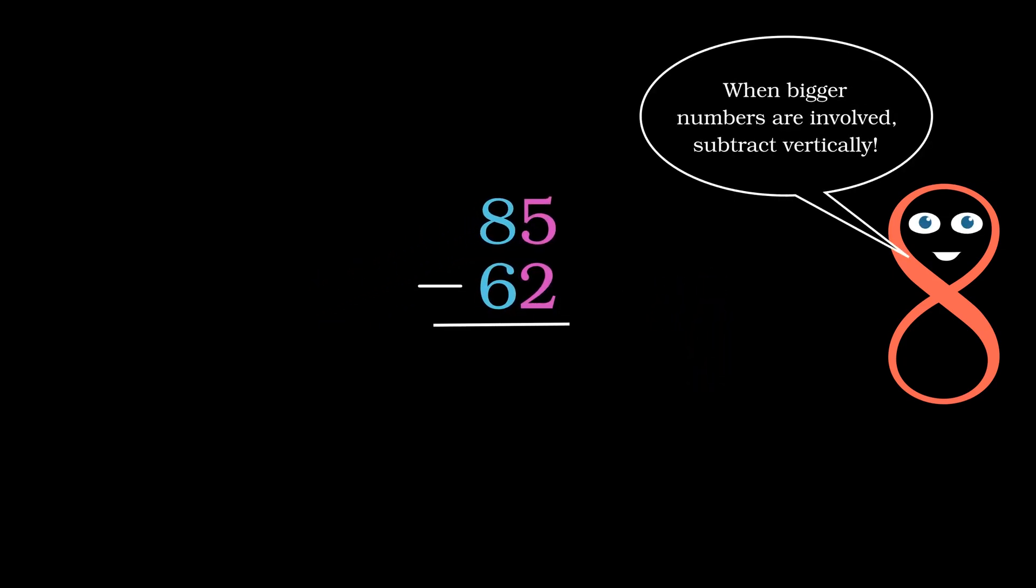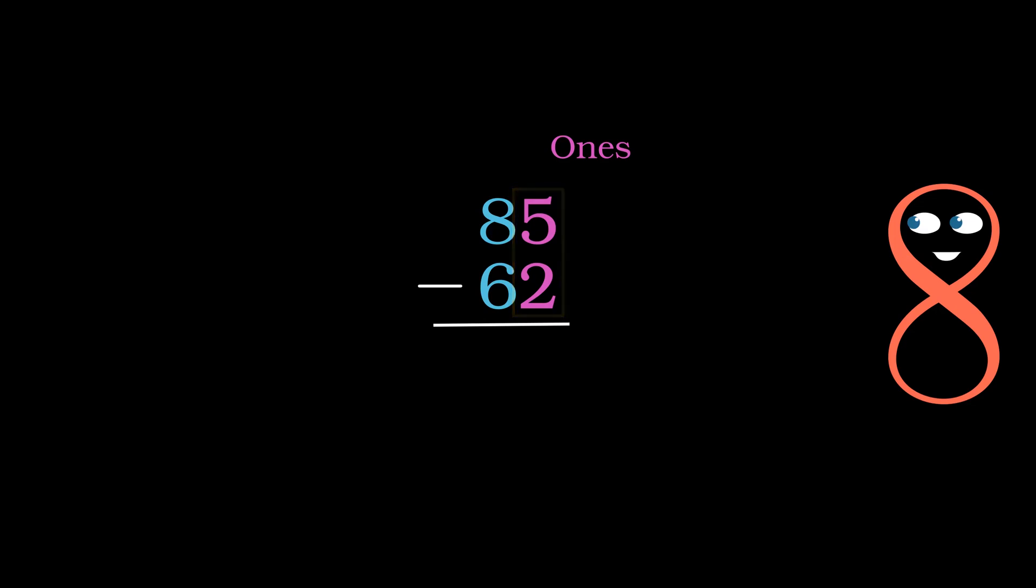As we mentioned earlier, vertical subtraction is quite similar to vertical addition, and here is why. We start with the right column numbers, the ones, where 5 minus 2 equals 3, and then from the tenth column, 8 minus 6 equals 2. And the result is again 23.